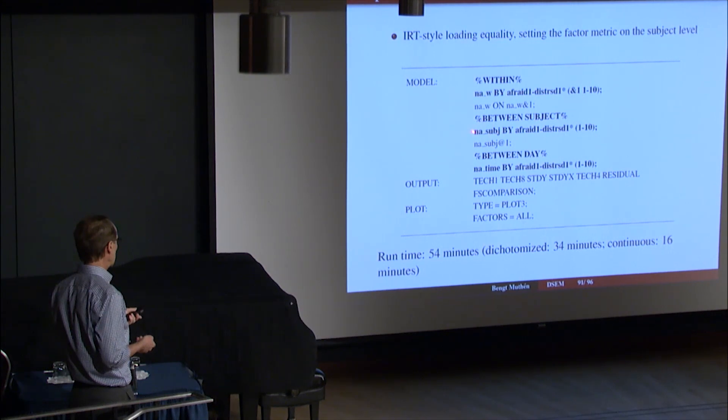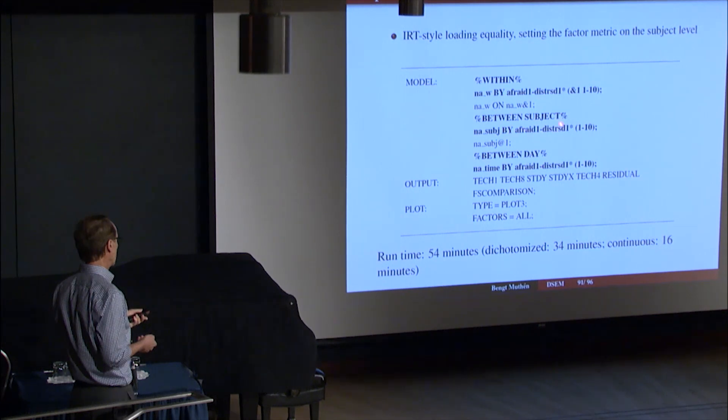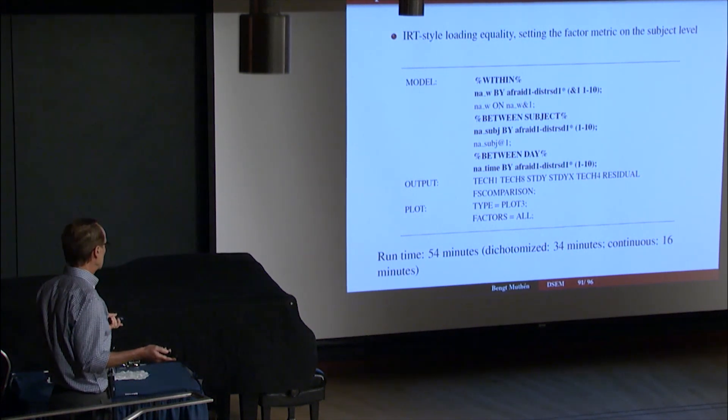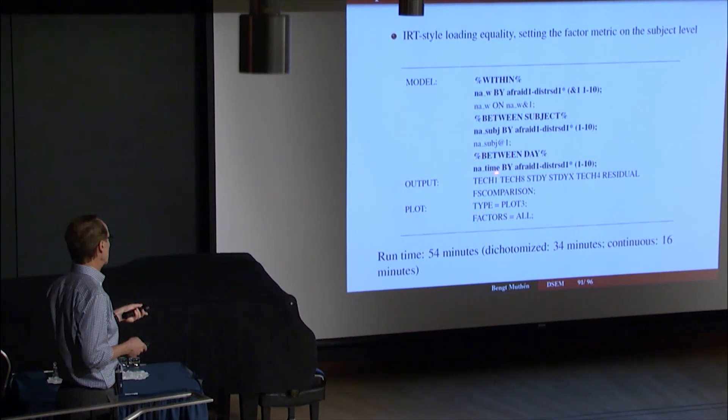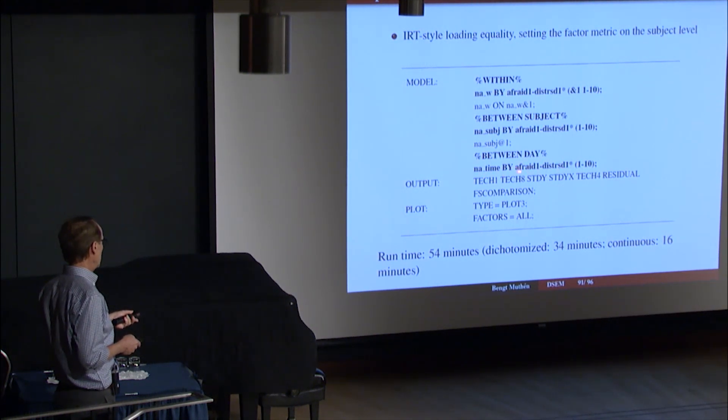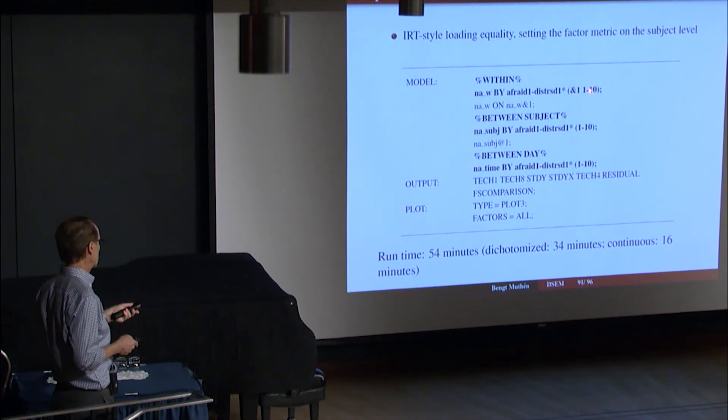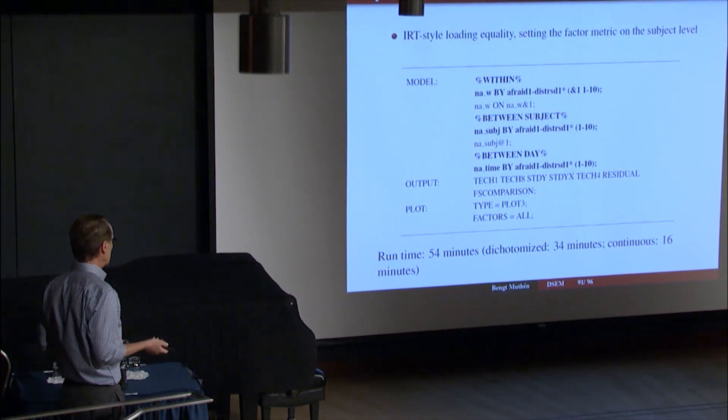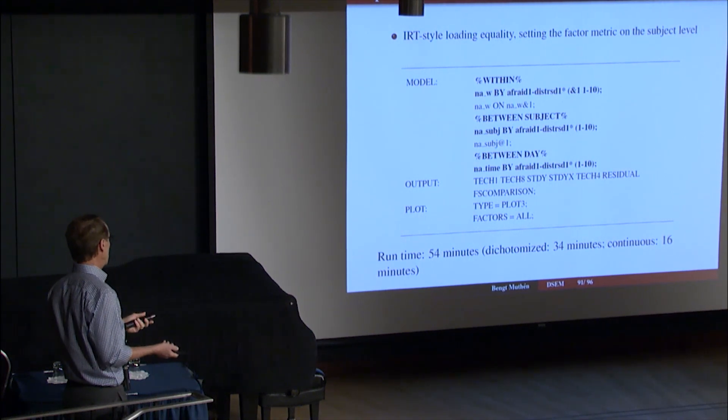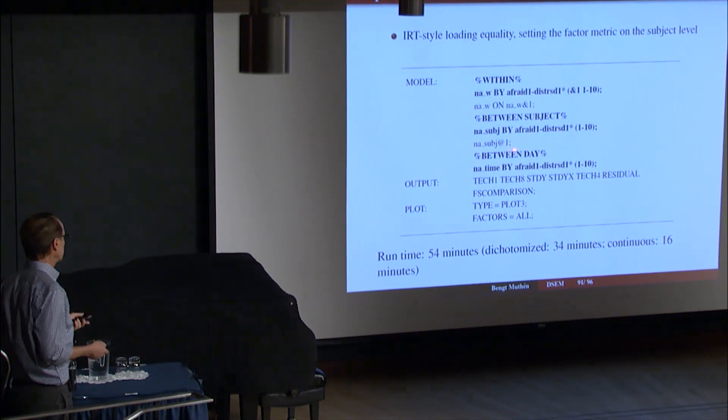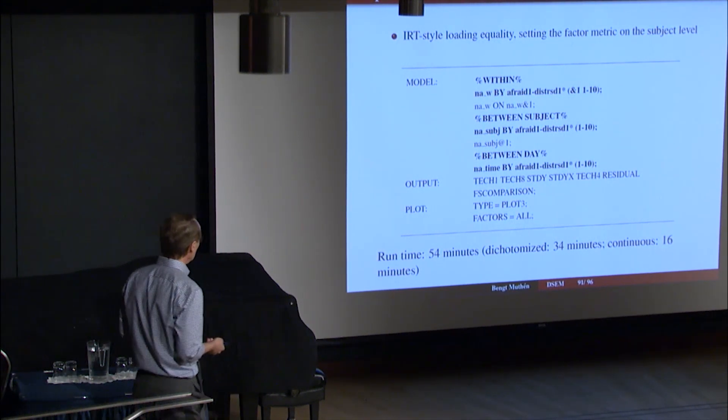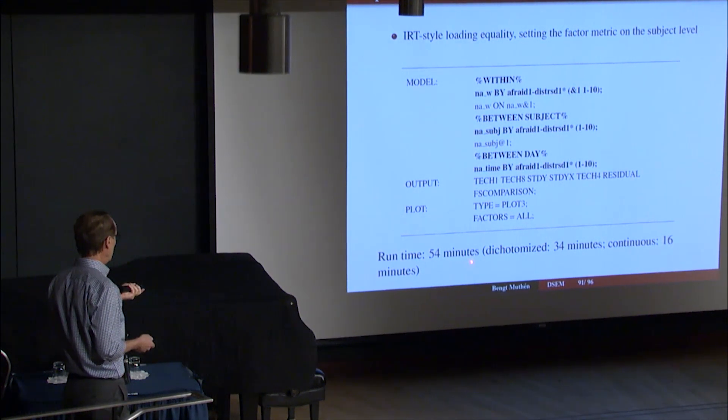And between subjects, we measure the negative affect on the subject level by the same items, that is the random intercepts. And all free. And we set them equal to the one on the within level. So that lambda between equals lambda within issue. Now we have ten free factor loadings. So somewhere, we have, well, let me just take it further. So then we have between day variations. So we have negative affect for the time measured by those same random intercepts, but now varying across time and still equal across levels. So this is sort of a cross-level version of the IRT style equality loading. We have ten free loadings, I began to say. And somewhere, we need to set the metric. That is, you can fix the factor variance to one. And I chose to do it on the subject level here. But there could be a cottage industry of papers trying to decide where you should set the factor metric and how you should set it. Which probably will happen.